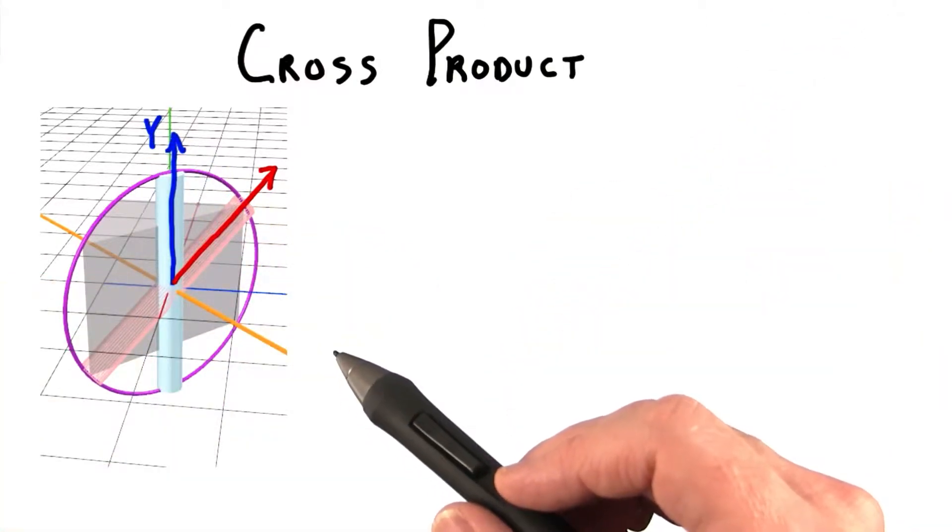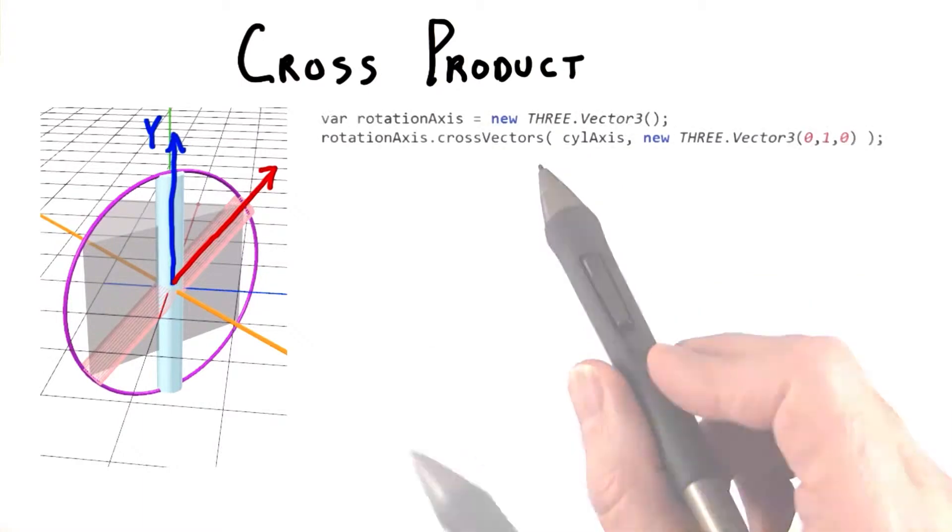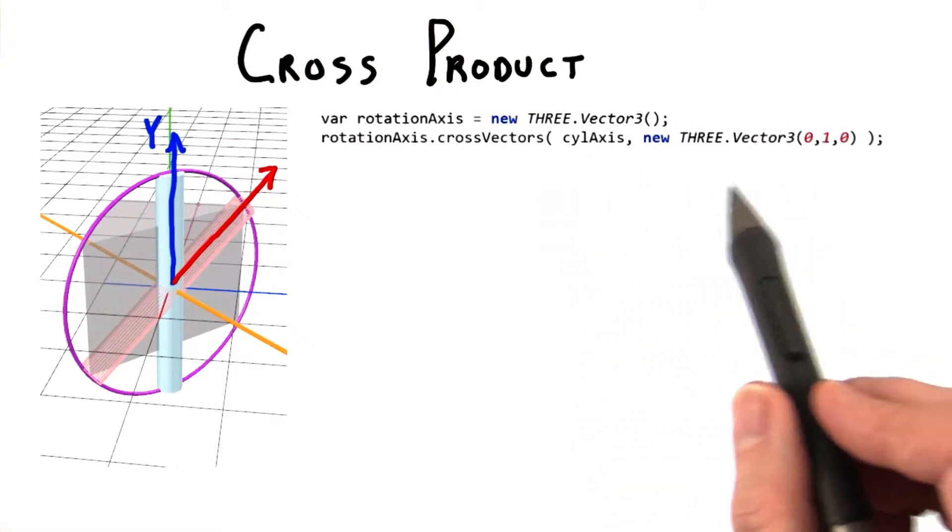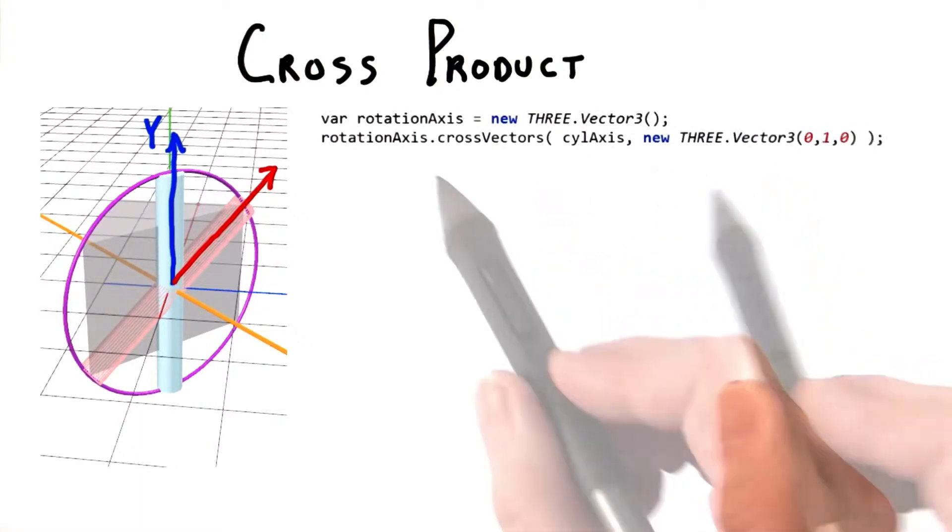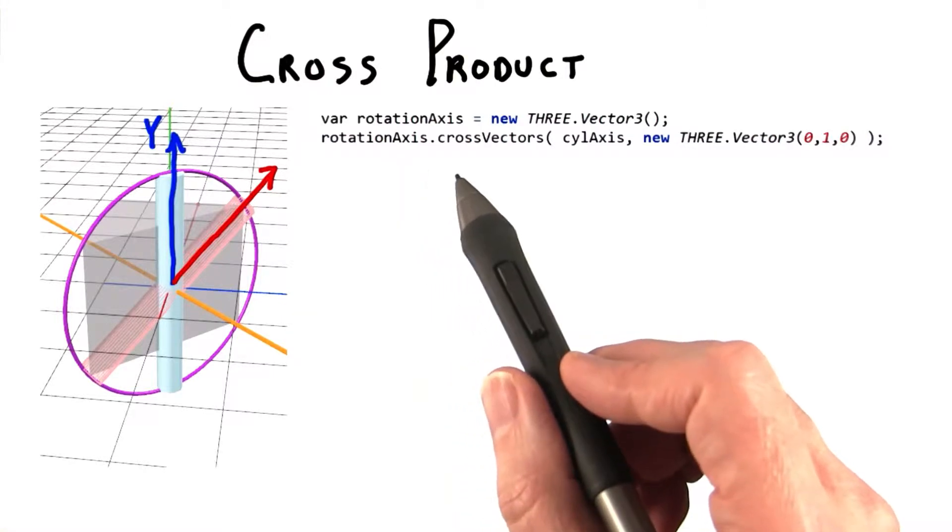Happily, there's an easy way to get the axis of rotation, and it's called the cross product. In three.js, you call it like this. It takes two vectors as its inputs, and the result is put into the vector3 itself.